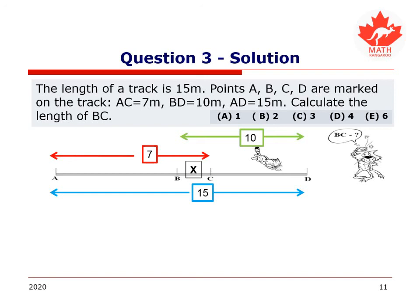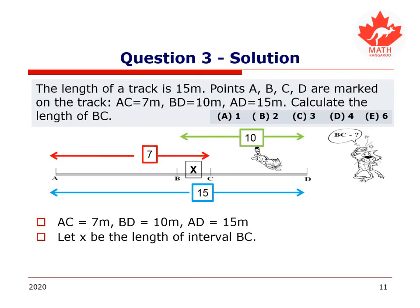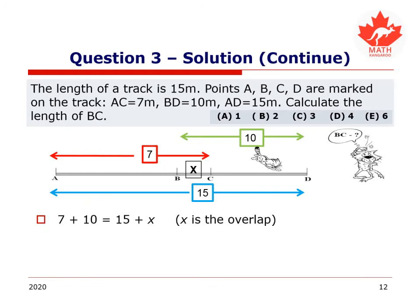Well, we know exactly what to label as x. We just transfer what we know to the diagram that we have. AC is 7, BD is 10, AD is 15, and the unknown BC will be x. All measurements in meters. What else can we say? Well, both intervals AC and BD cover the whole of AD with an overlap extra at BC, right?